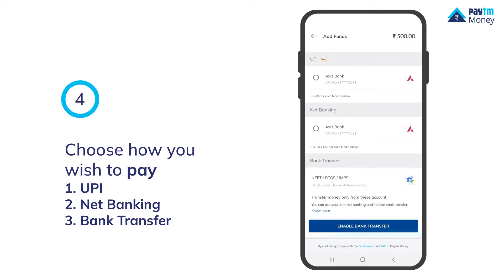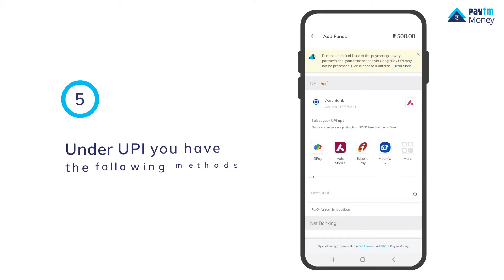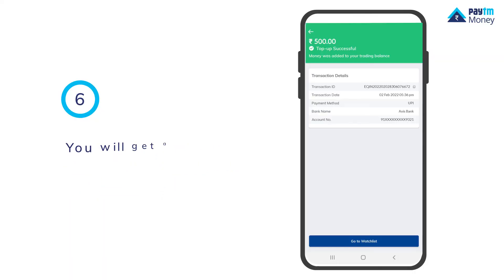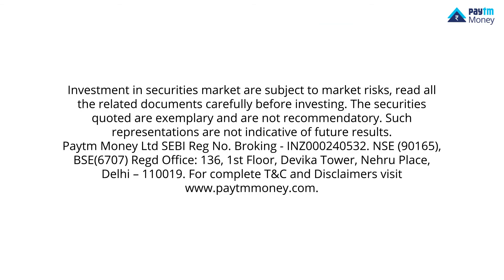There are three options available: UPI, net banking, and bank transfer. Under UPI you have the following methods to choose from. Once you are done, you will get a confirmation screen of a successful top up.